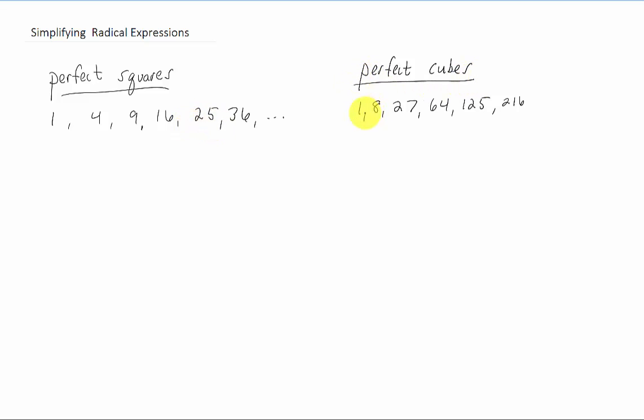Similarly, perfect cubes are numbers that you get when you cube integers. So if you took a cube root of one, you would get one, a cube root of eight, you would get two, the cube root of 27, you would get three, and so on.